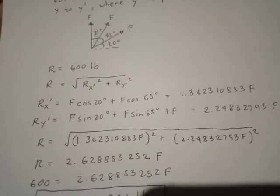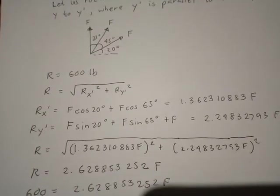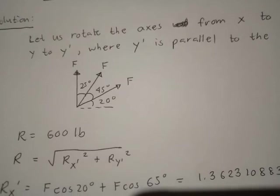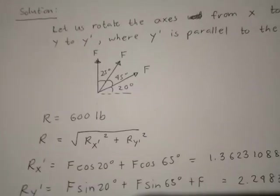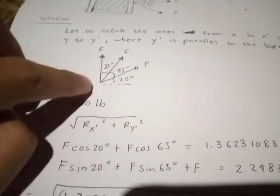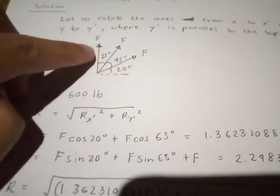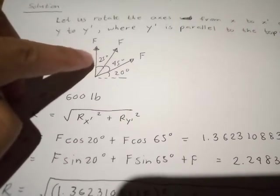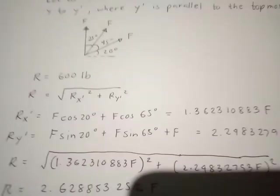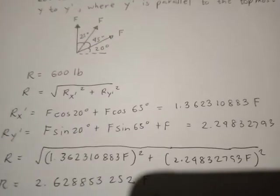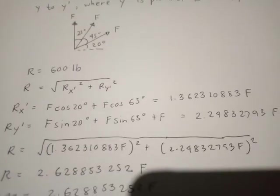We have R X Y bar is F cosine 20 degrees and then cosine 65, 45 plus 20, of this F and this F. This uppermost F has no X components since it is vertical. So we have 1.36231083F.